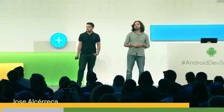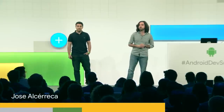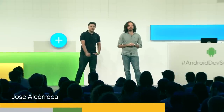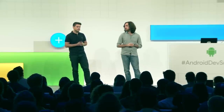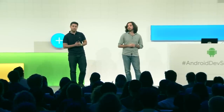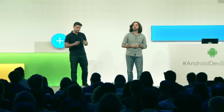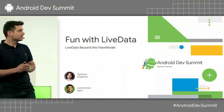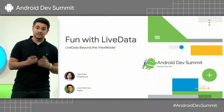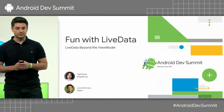LiveData is one of the first architecture components that we released last year. In this talk, we're going to explain what it is, talk about some of the transformations that you can do, how to combine LiveDatas, and then we're going to talk about some patterns and anti-patterns that you might want to avoid.